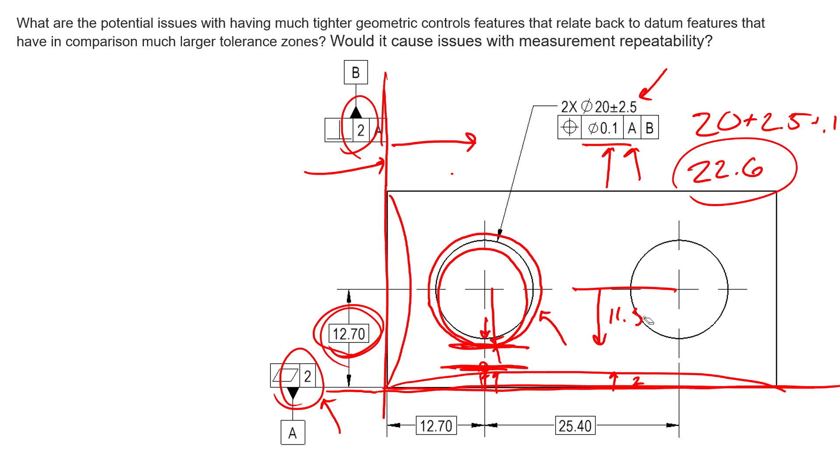So to fix this, we have three values we can play with. We can either adjust the flatness error of our datum feature A, or we can adjust the amount of position error that is allowed, or we can adjust how big that diameter can get or the size tolerance. Again, it just depends on which one's more critical. So again, thanks for submitting your question and hopefully this helps clarify some things for you.